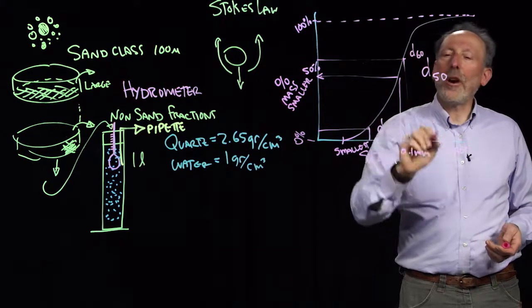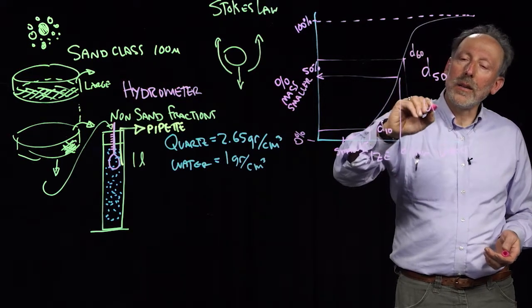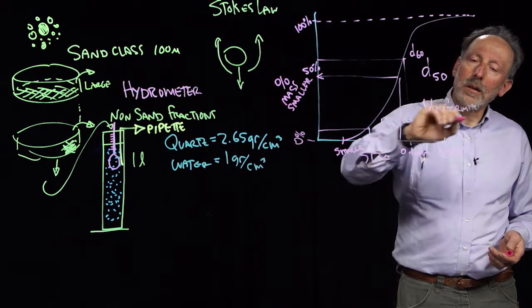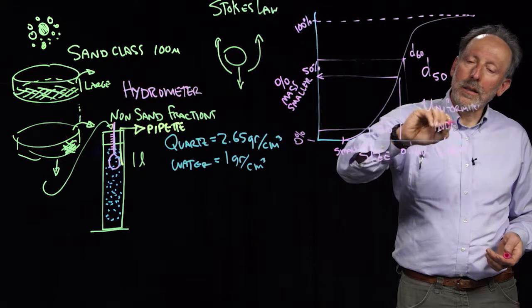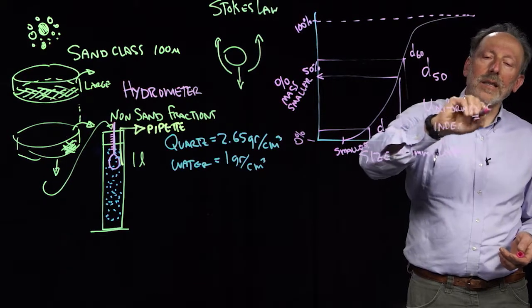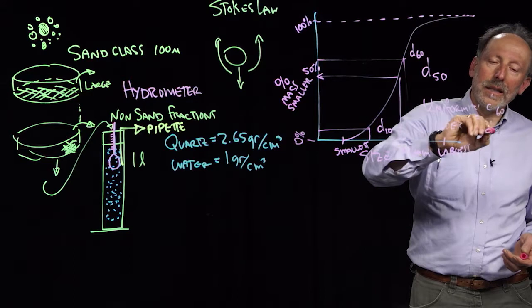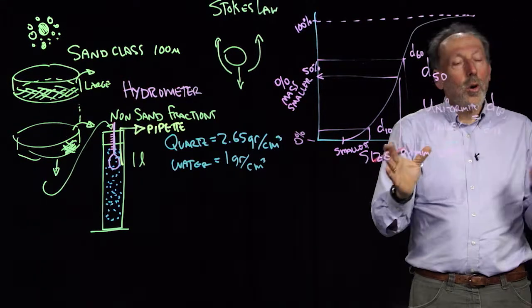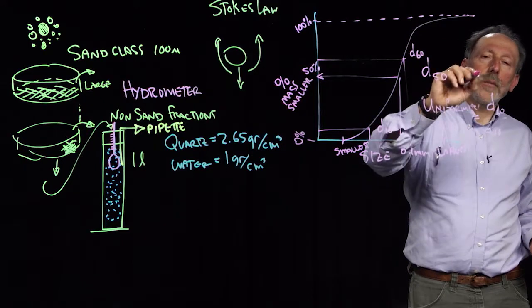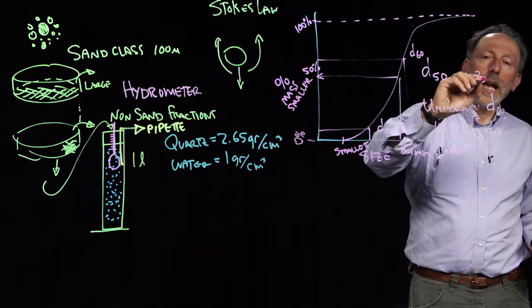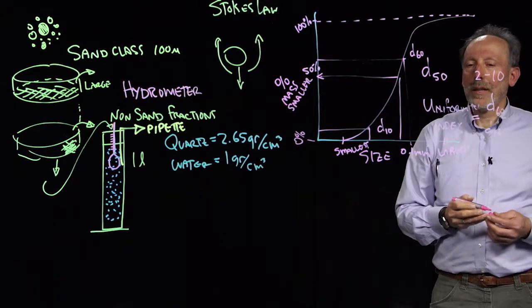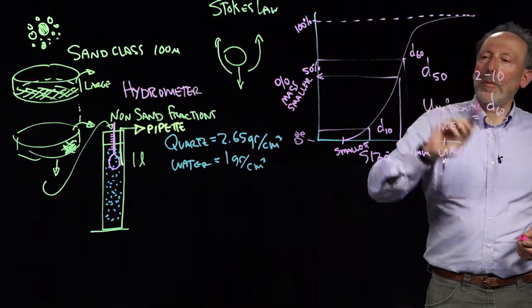And why would they do those? Because the uniformity index is defined as the D60 divided by the D10. So when we have a very uniform soil, this will be on the order of two. And for a very non-uniform soil, that'll be as high as 10. So we would call that the uniformity index.